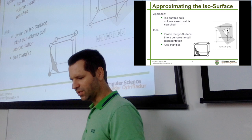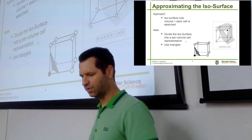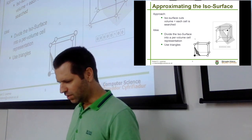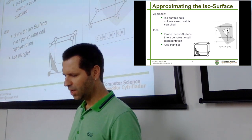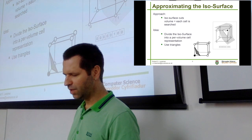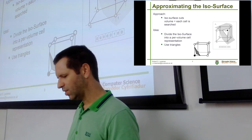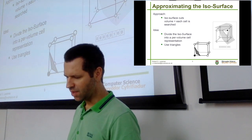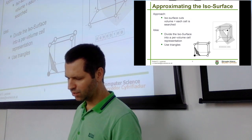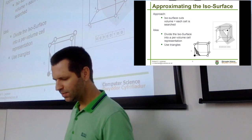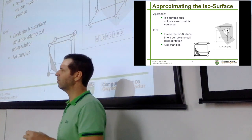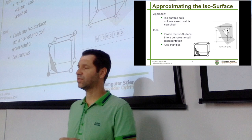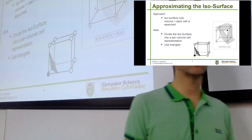We divide the isosurface search into per-volume-cell representation and use triangles. A cell consists of eight vertices that form a cube, and that's where the volumetric data is stored. We search this cell for isosurface intersections. Here's a cell and a sample isosurface that intersects the cell, and we approximate the surface with a triangle. By the way, there's a very cool animation of marching cubes on isosurfacing now on YouTube that didn't exist last time I checked about a year ago.